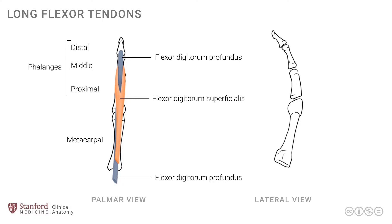We need to review this in a lateral view as well, just to clarify the arrangement. Looking at the lateral view, we have the two tendons — the flexor digitorum superficialis, which is split, and it allows the FDP to come up to the distal location, attaching onto the distal phalanx.